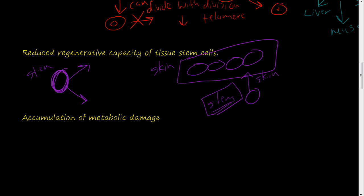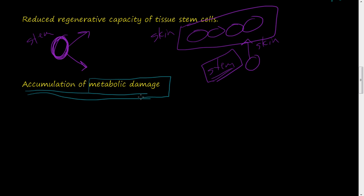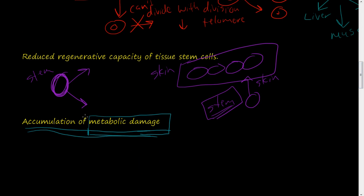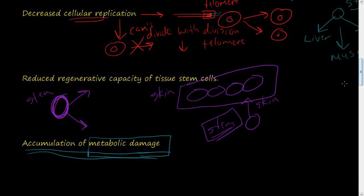The last mechanism is accumulation of metabolic damage. Similar to DNA damage, as we go through life there is a lot of metabolic damage that can damage our cells and quicken the aging process. As with the SIR2 activity that helps repair DNA damage, if we can figure out ways to increase these repair mechanisms, we can live longer. That is a recap on cellular aging — how cells age and eventually die.